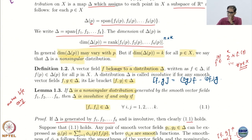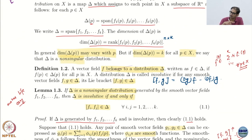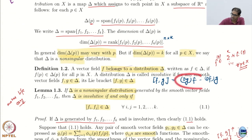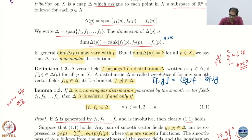Notice the Lie bracket is not some linear combination — it is a bracket operation. But we know that the Lie bracket also gives a new vector field. So what are we saying? If two vector fields belong to a distribution, this new vector field from the Lie bracket also belongs in the distribution. This is called involutivity.